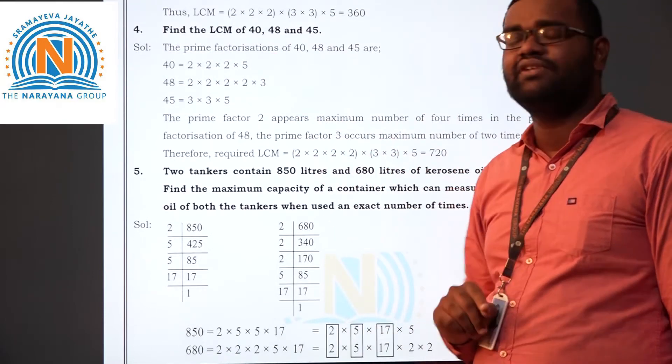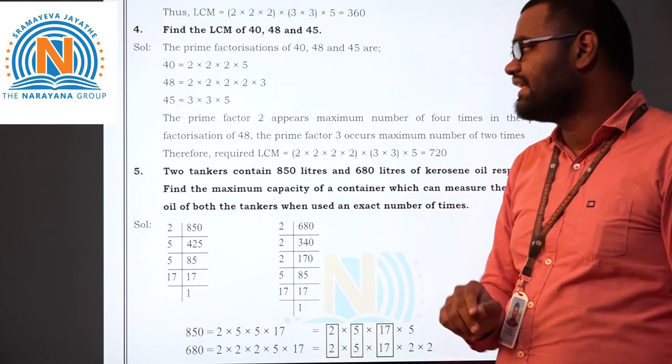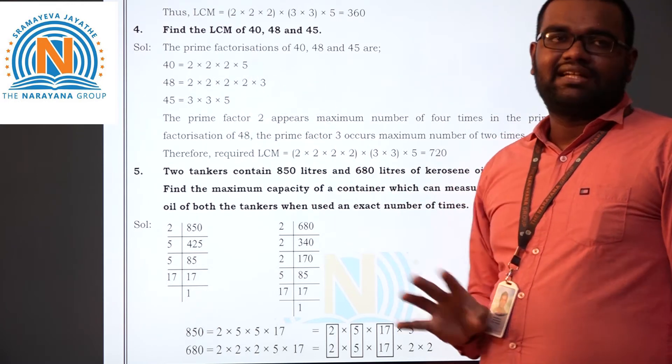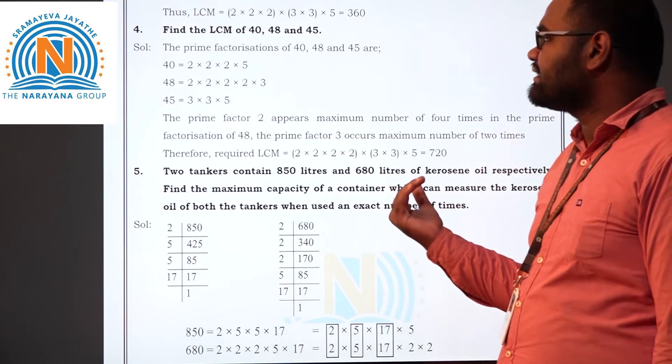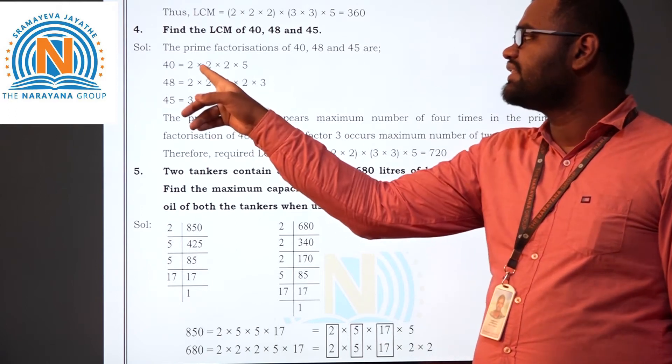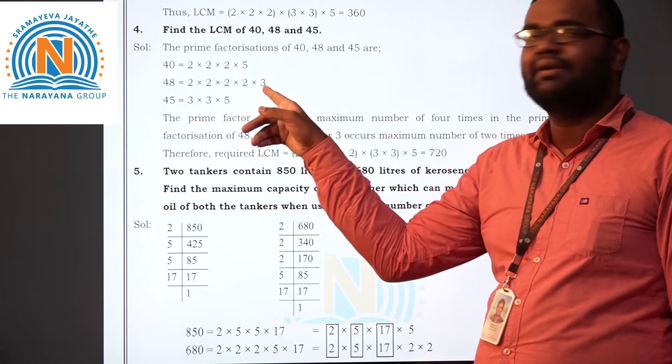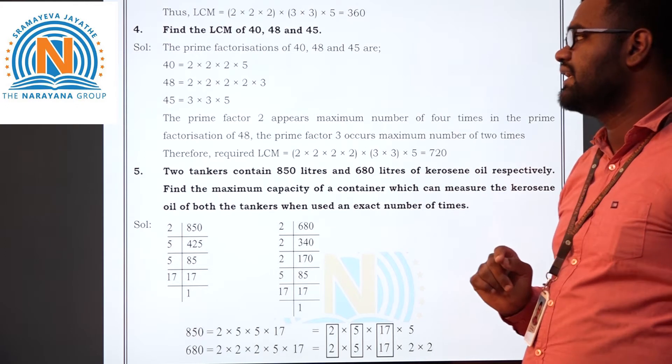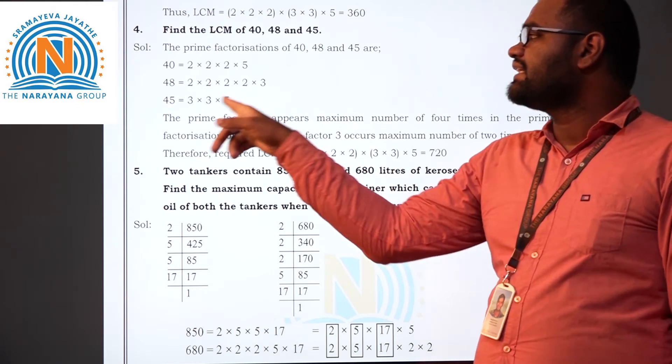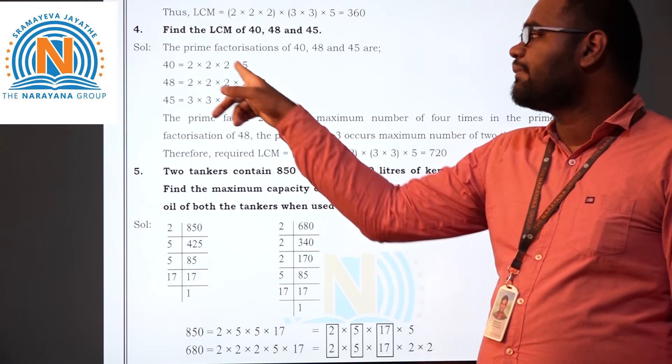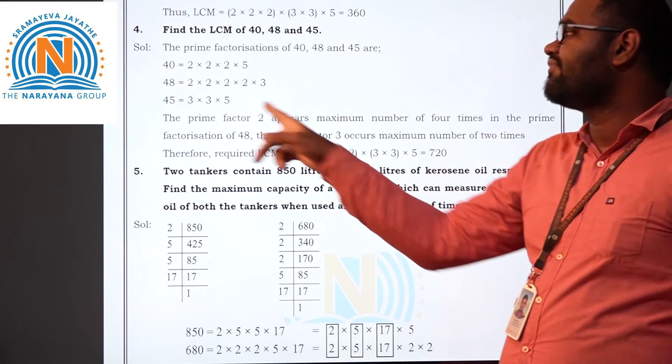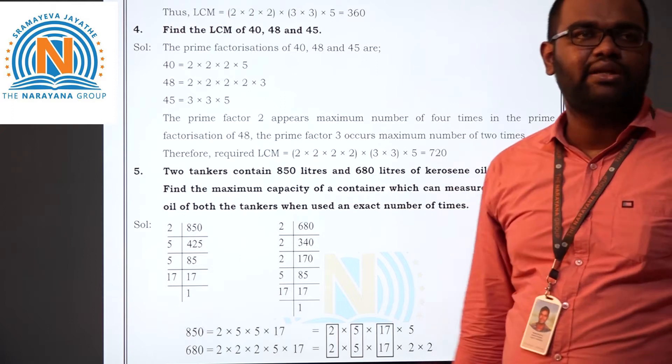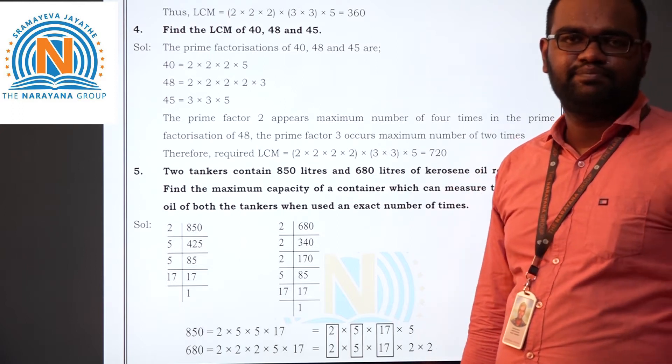Here also for 3 numbers you have to take LCM. Take prime factors for all the 3 numbers. All the 3 numbers are having no common factors. Next same as previous problem. 2 is there. This is 3 times it is repeating. Here it is repeating 4 times. So which is the maximum count is 4. We take this 4 times. Next is 3. 3 is occurring here 2 times. Here it is 1 time. Here it is 0. So it is 2 times we have to take. Then 5 it is repeating only 1 time. We will take that. Multiply everything. You will get the value as 720. Is it clear students?